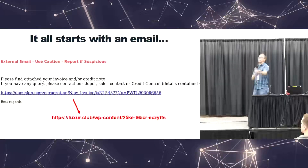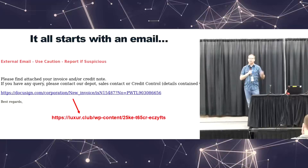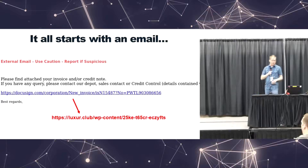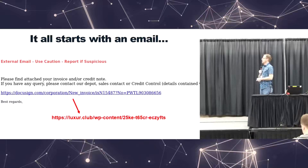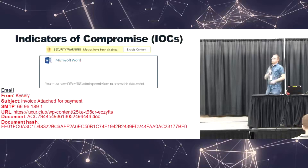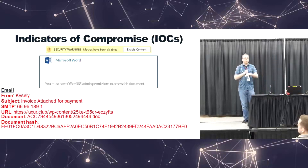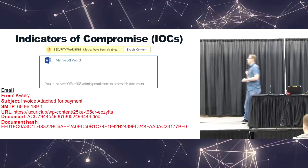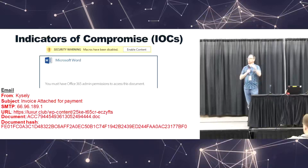It always starts with an email. The theme really doesn't matter — whether it's an invoice, an AT&T bill, or whatever. The bad thing here is that it's not really DocuSign; it's really taking you to a WordPress site. If an end user clicks the link, it prompts you to download a document, and opening it says 'Enable Content.' Before we get into the document itself, there are already some indicators of compromise: who it's from, the subject, and the originating IP address — information you can give to your email admin to search and nuke or quarantine.